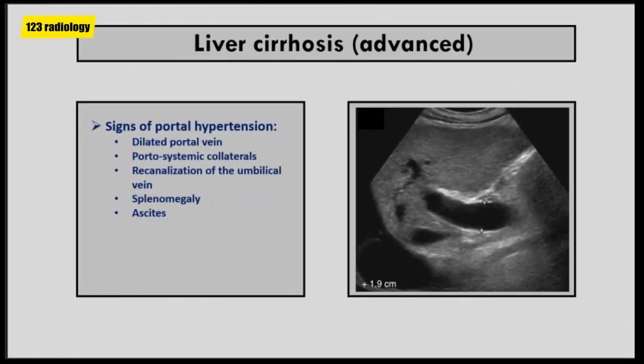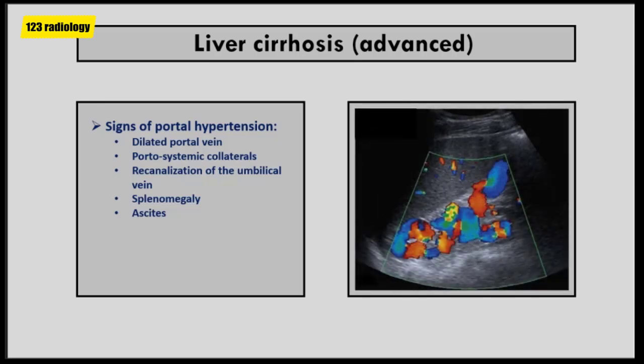In advanced liver cirrhosis, as a result of fibrosis, portal circulation resistance is increased, resulting in portal hypertension. One of the first signs of portal hypertension on ultrasound is increased diameter of the portal vein greater than 13 mm with lack of respiratory variation. Other signs of portal hypertension are dilated portosystemic venous collaterals, which can be seen at the perisplenic region and around the gallbladder. On ultrasound, collaterals appear as multiple anechoic serpentine structures that communicate with each other, showing venous flow on color Doppler.